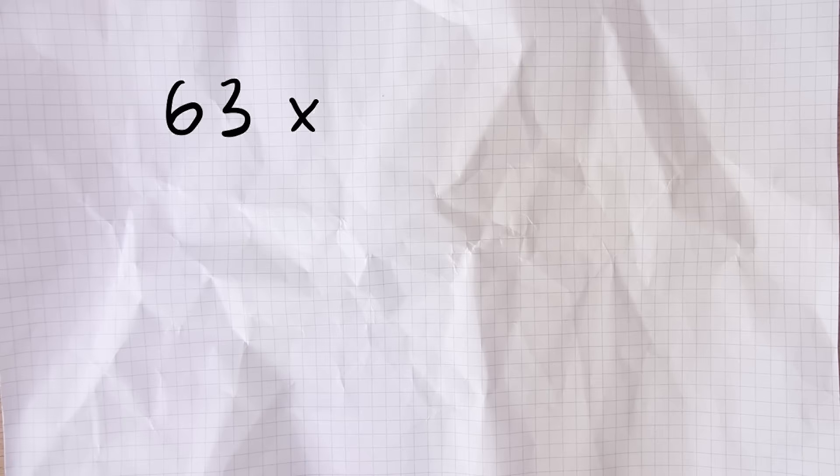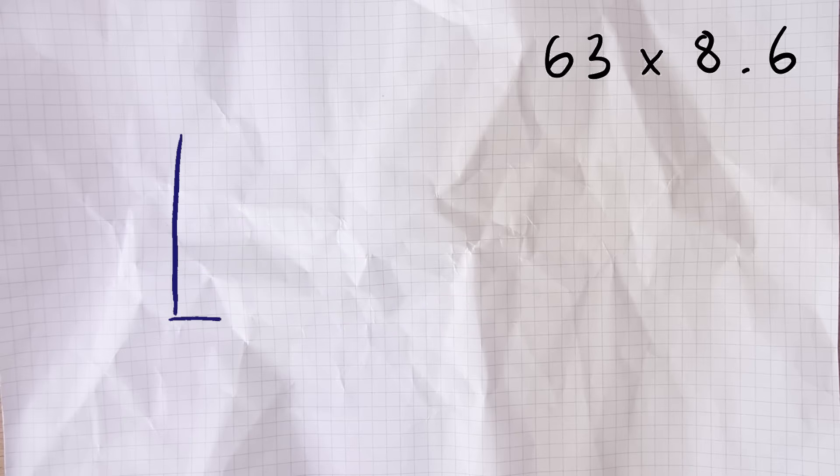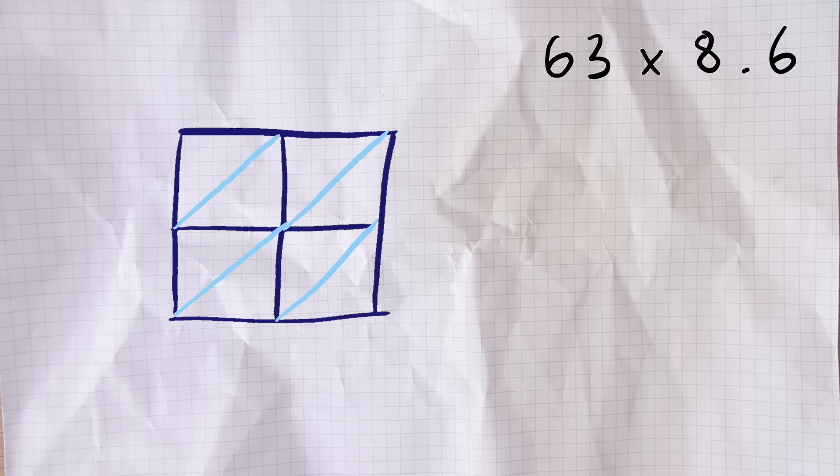The final question then: 63 times 8.6. Let's do a quick estimate, round the 63 off to 60 and the 8.6 up to 9. Well 6 times 9 is 54, so 60 times 9 will be 10 times bigger: 540. So we have a rough idea of what the answer should be. We can do everything the same, draw our grid with the numbers across the top and down the side, and fill in the grid with the multiplication before completing the addition around the grid, not forgetting to carry the numbers if appropriate.